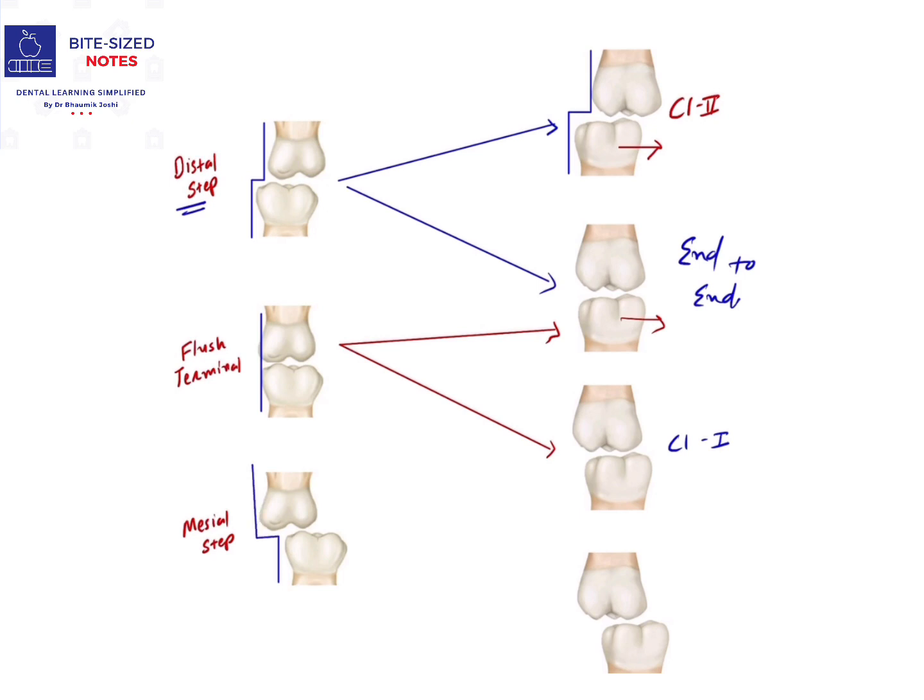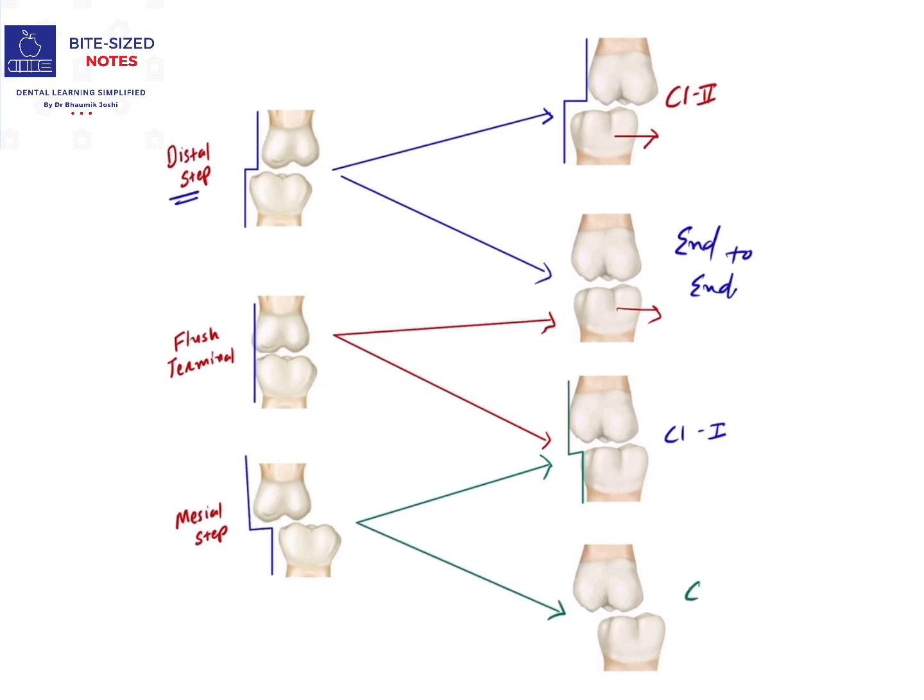In that case, when the molars erupt, they will also erupt in the same fashion, and that fashion is Class 1. But if the forward shift takes place, it can lead to Class 3 relationship in the permanent dentition.